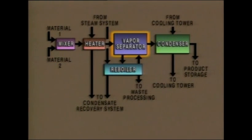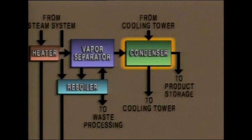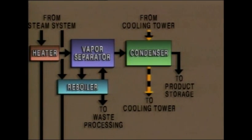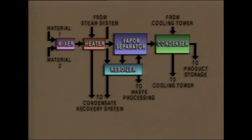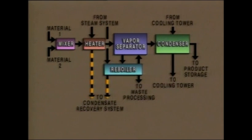The vapor from the vapor separator flows to a condenser. In the condenser, the vapor is cooled by a flow of water from the cooling tower. The condenser product is then sent to storage. Steam also flows to the reboiler, and condensate from the heater and reboiler goes to the condensate recovery system.